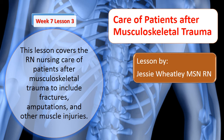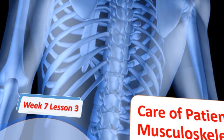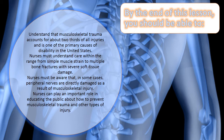This lesson covers the RN nursing care of patients after musculoskeletal trauma, to include fractures, amputations, and other muscle injuries. By the end of this lesson, you should be able to understand that musculoskeletal trauma accounts for about two-thirds of all injuries and is one of the primary causes of disability in the US. Nurses must understand the care within the range from simple muscle strain to multiple bone fractures and severe soft tissue damage. Nurses must be aware that in some cases, peripheral nerves are damaged as a result of musculoskeletal injury. Nurses can also play an important role in educating the public about how to prevent musculoskeletal trauma and other types of injuries.